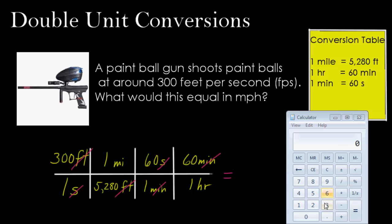Okay, all we need to do now is take the numbers in the numerator and multiply those together, get that product, and then divide that by the product of the denominator. So I'm going to type in 300 times 60 times 60.